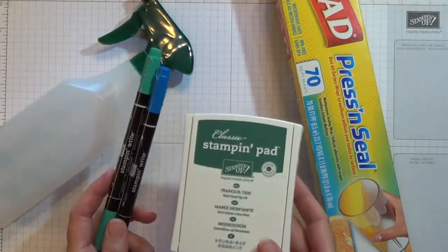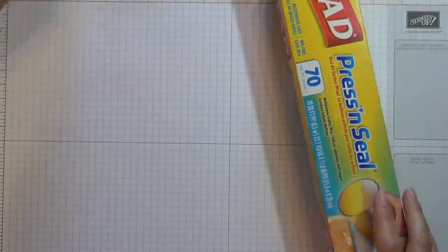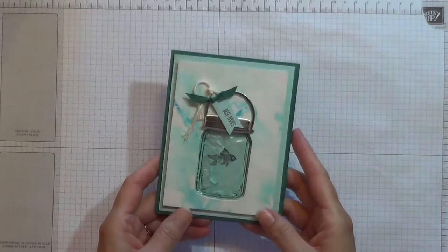I don't have the marker for the Tranquil Tide, although this works better with markers so that's why I'm using the pad but that will work today. And just a spritzer bottle with water and some Press and Seal. And I'm just going to bring over some grid paper that I've already used for this technique. It's a little bit messy.